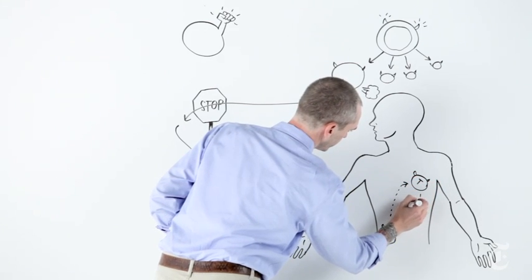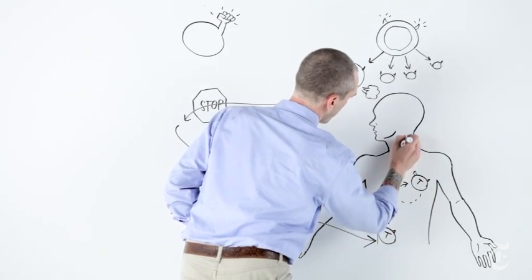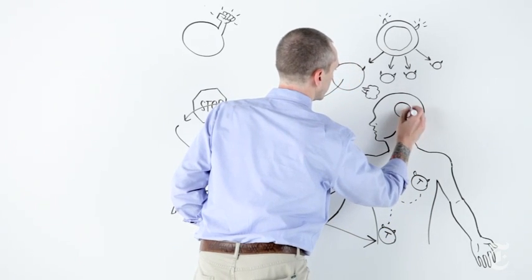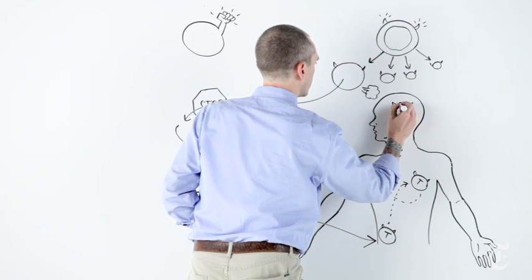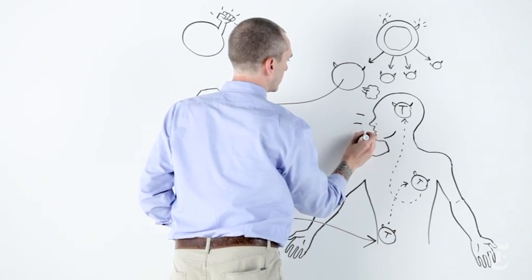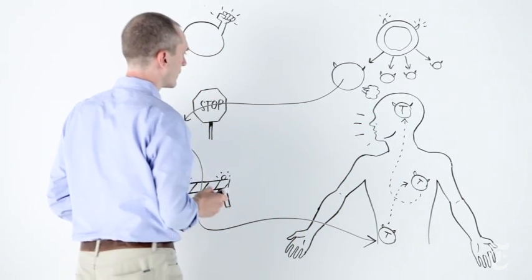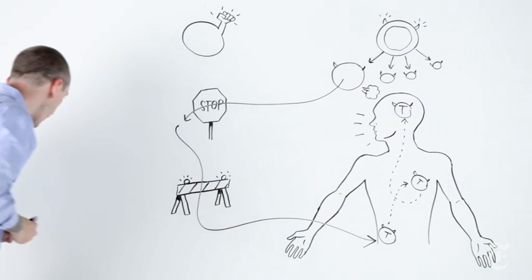As the mutated cells continue to multiply, they can invade neighboring tissues and metastasize, spreading to other parts of the body. But maybe cancer is even more clever than we believed in exploiting our body's own mechanisms.